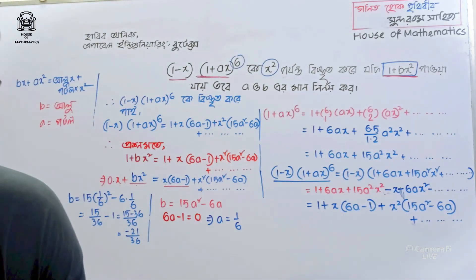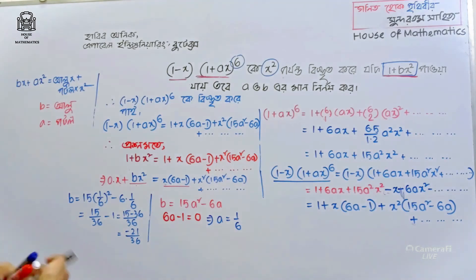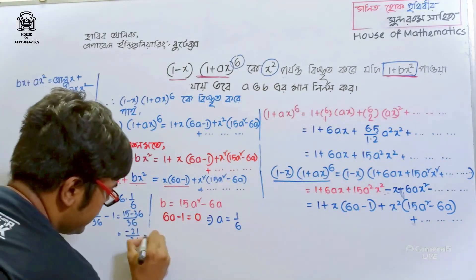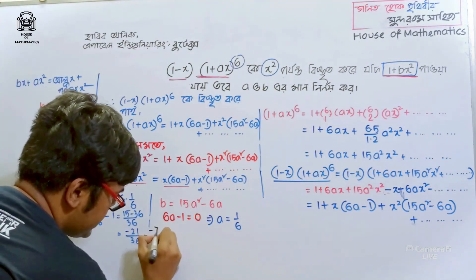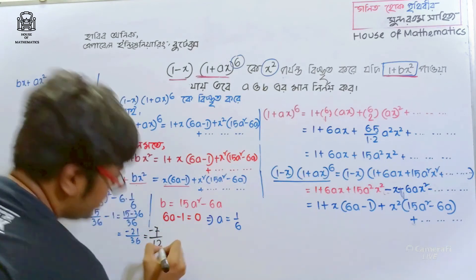Ultimately, our answer: b is equal to minus 7 over 12.